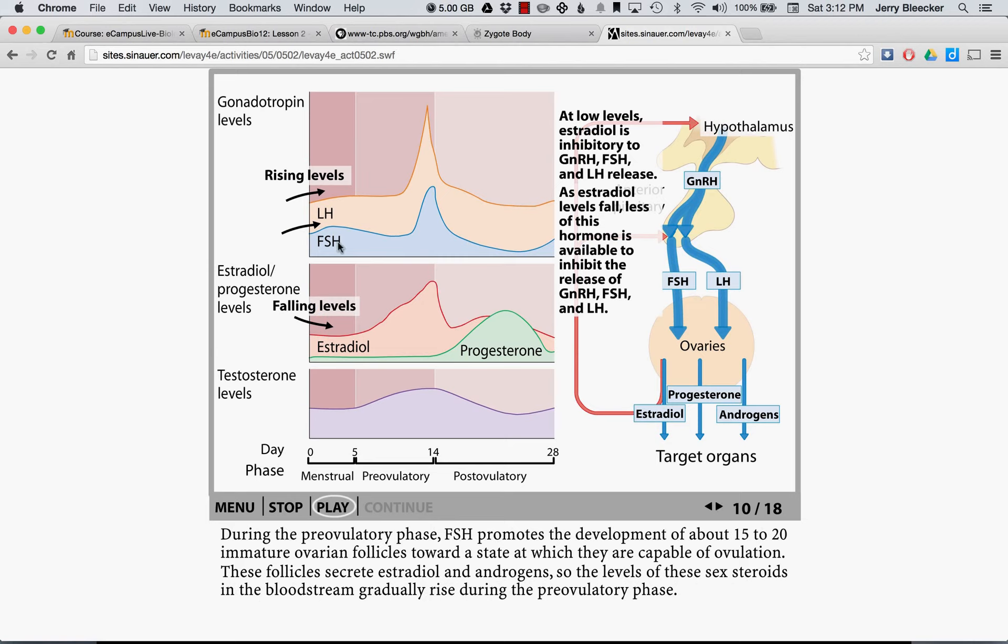Estrogen hits its peak level here, and you can see that LH and FSH are also at max. Now, when the corpus luteum forms, it produces progesterone. Estrogen had a positive feedback here, and basically what estrogen does is convinces the hypothalamus to tell the pituitary gland to keep making a lot of this stuff.